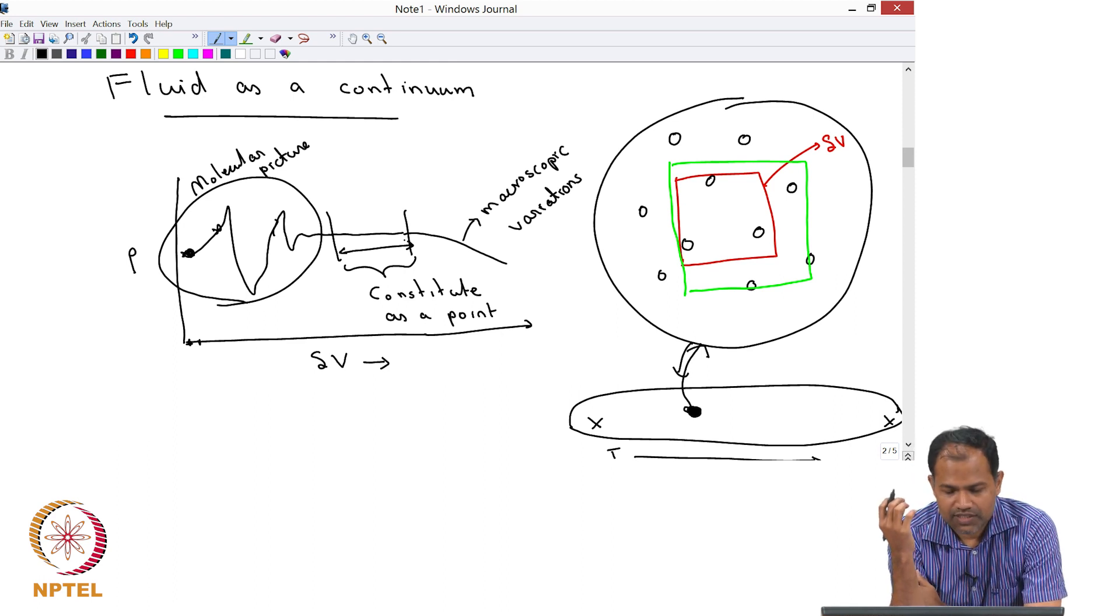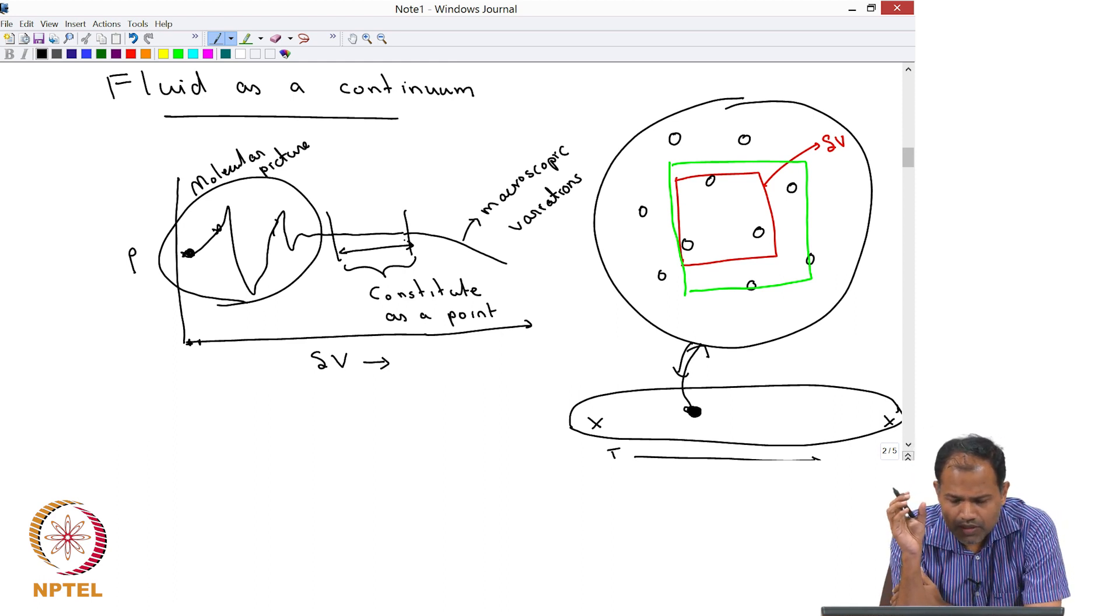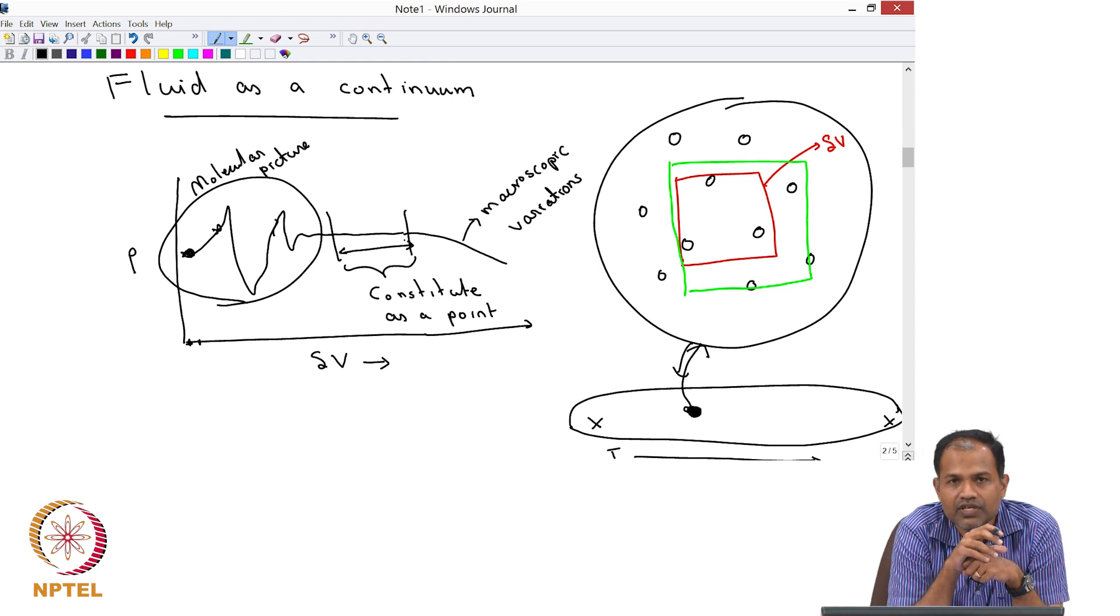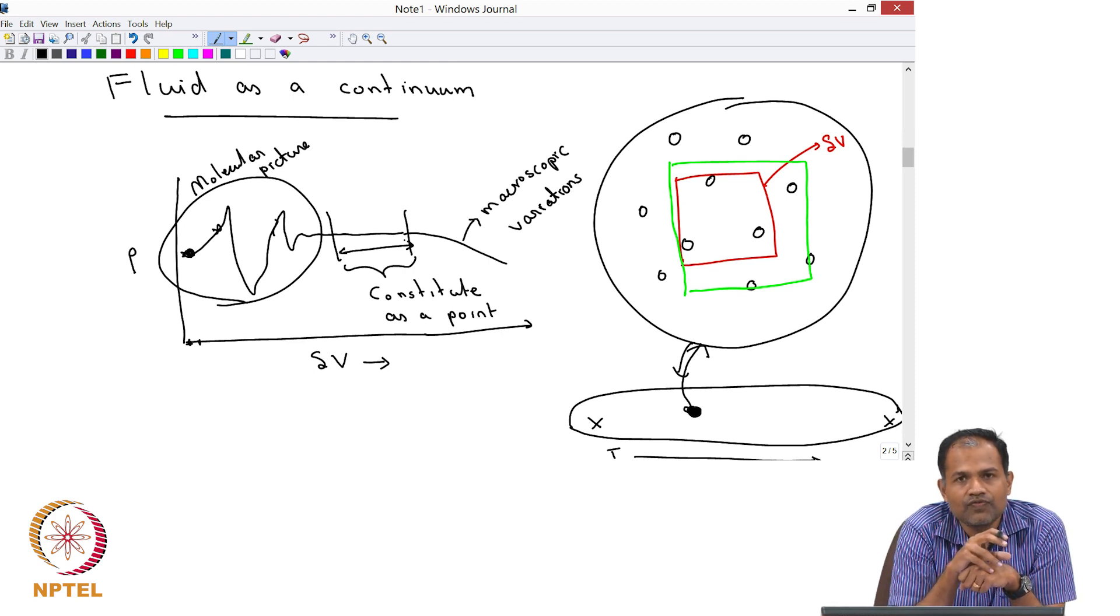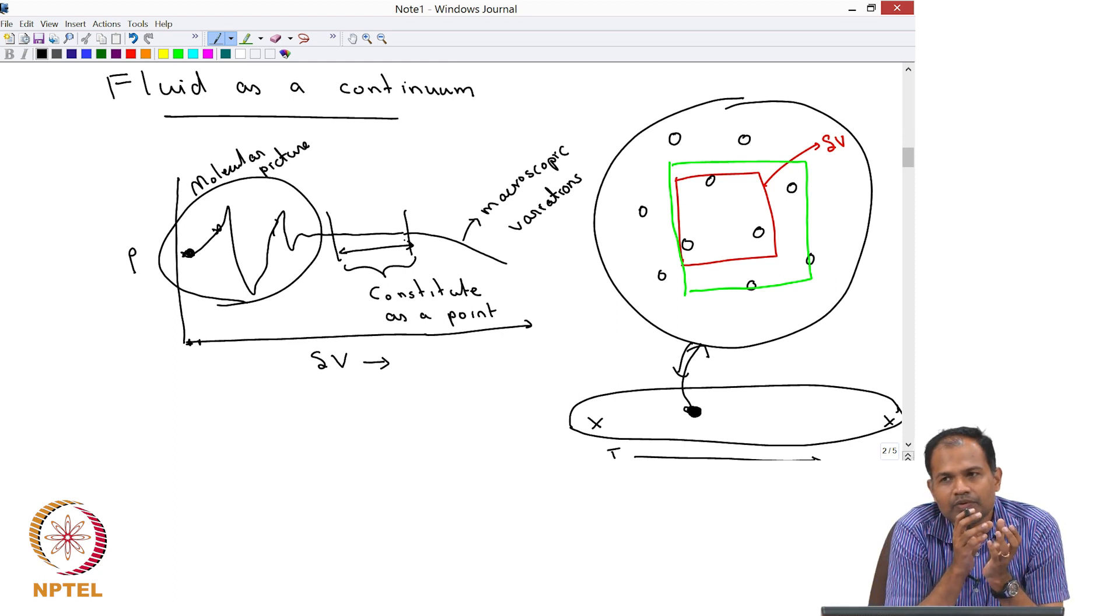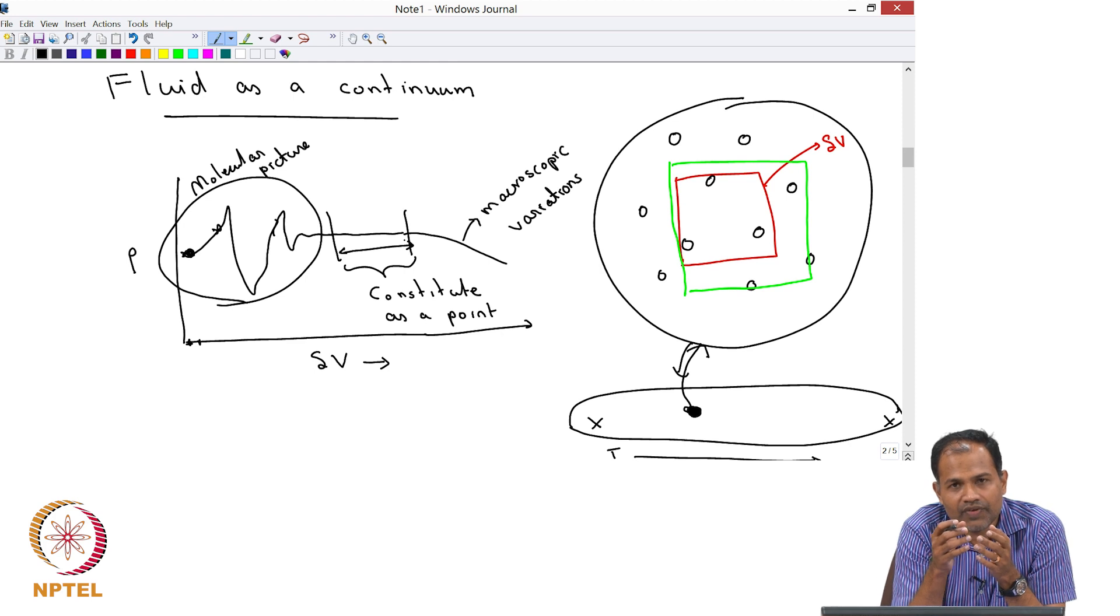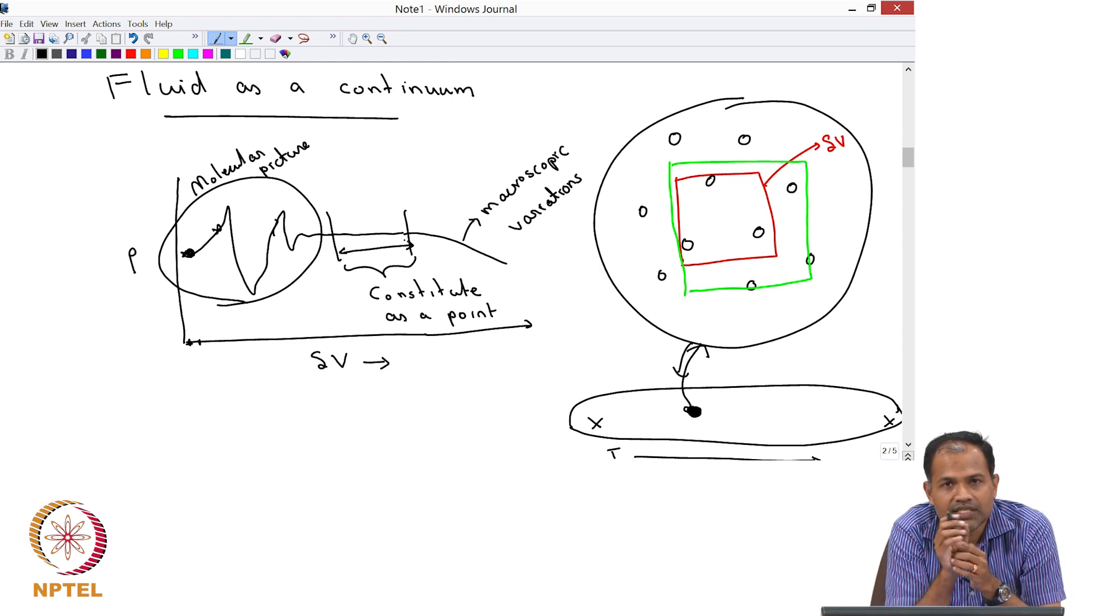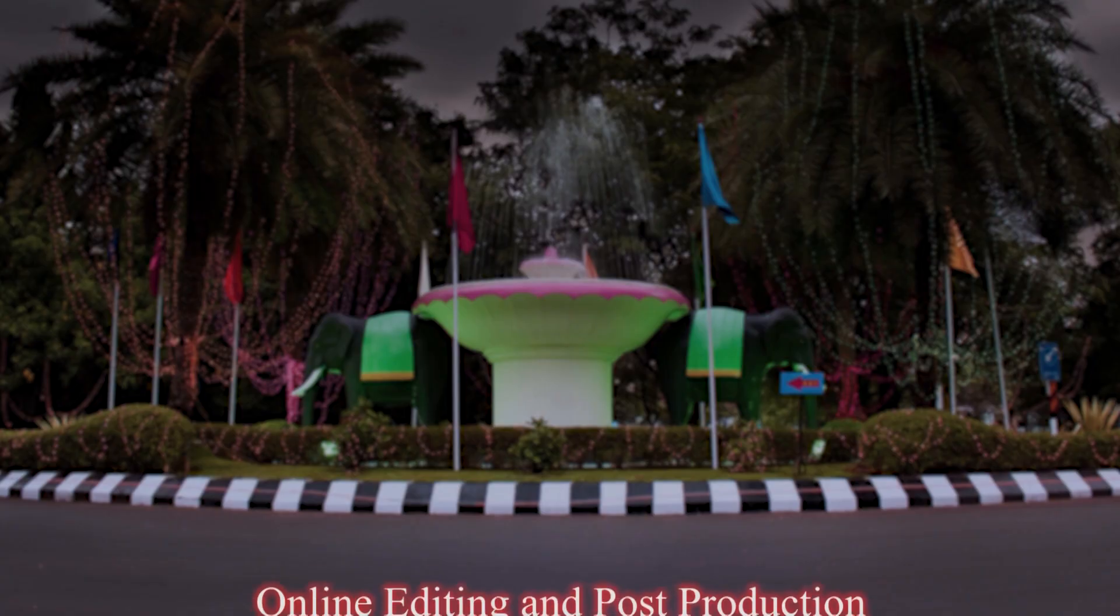Any quantity that you look at or any property that you assign to a particular point, that point will have enough number of molecules that you would not see any fluctuations because of the fact that it is constituted by discrete entities. That is the definition of a continuum, and we will treat fluid as a continuum. For us then, every property will be a well-defined quantity, and we are going to be staying away from the length scales of molecules. We will stay at length scales much larger than the molecular length scale.